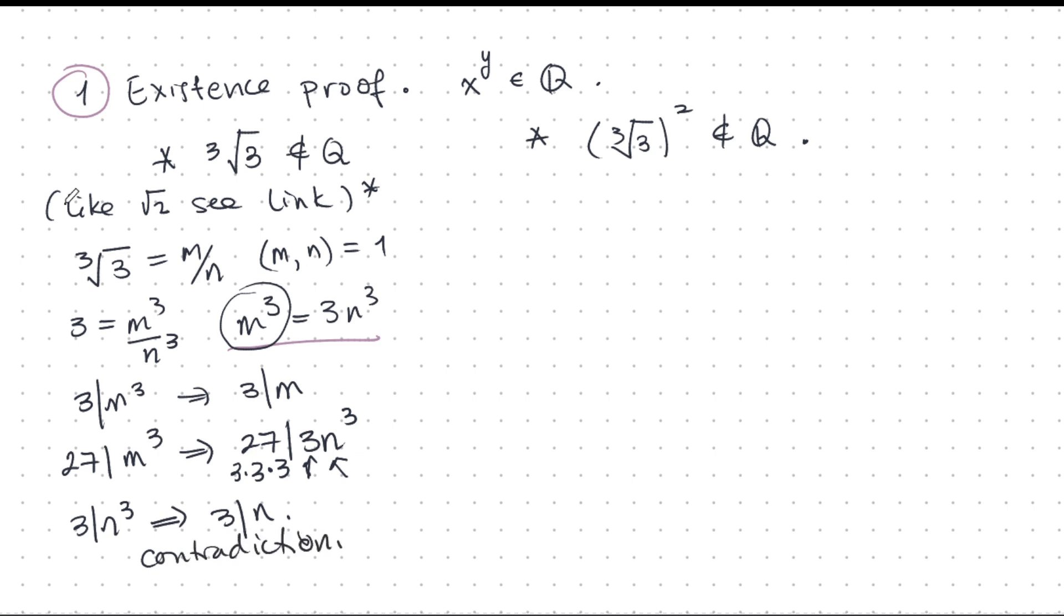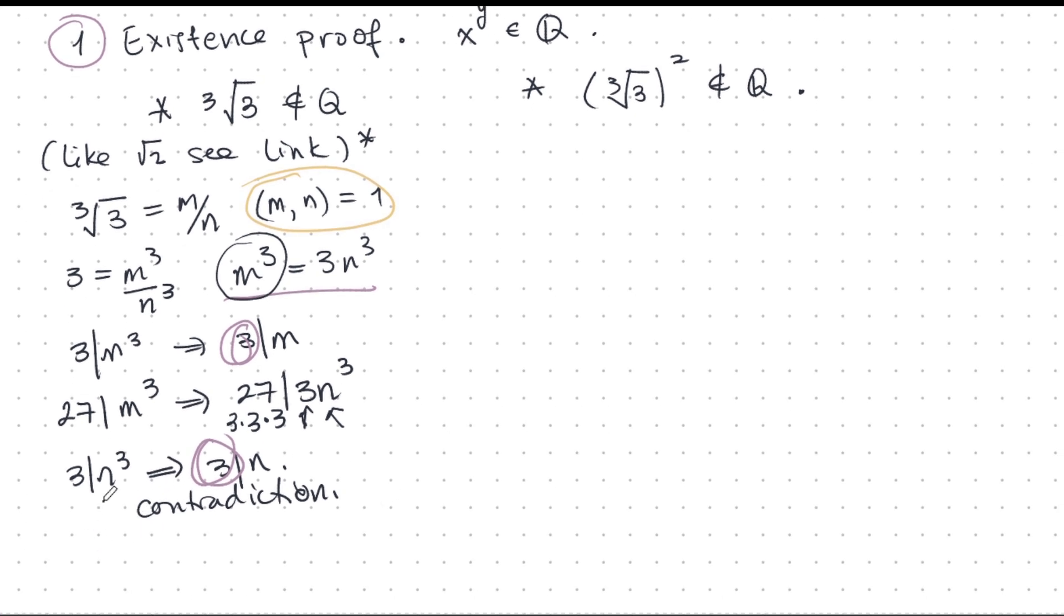And that's a contradiction, because we said they are coprime, but here we're saying they both have a common factor of 3. So it must be that cube root of 3 is not rational.